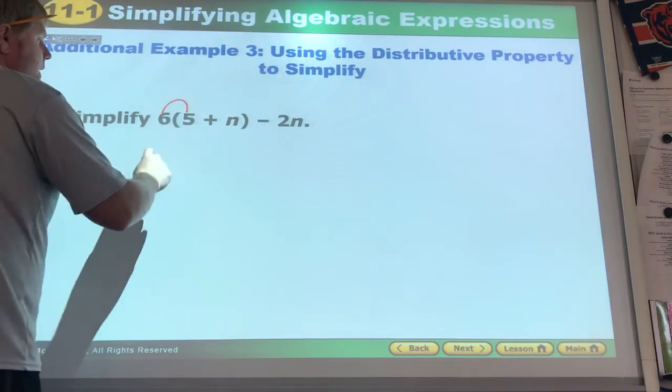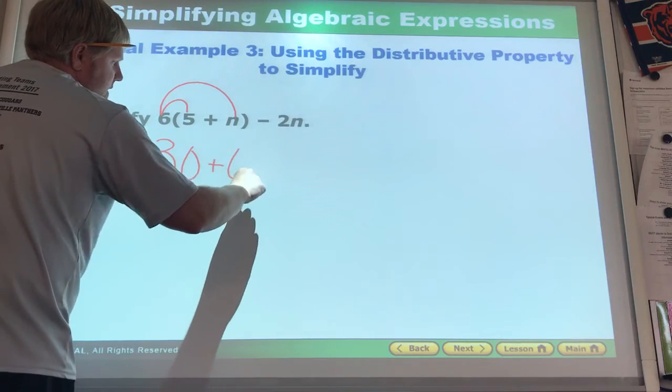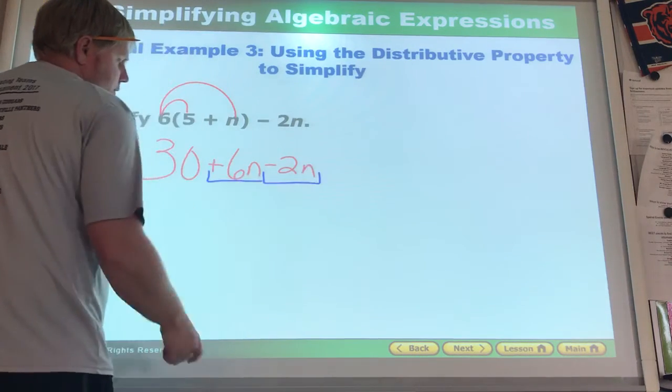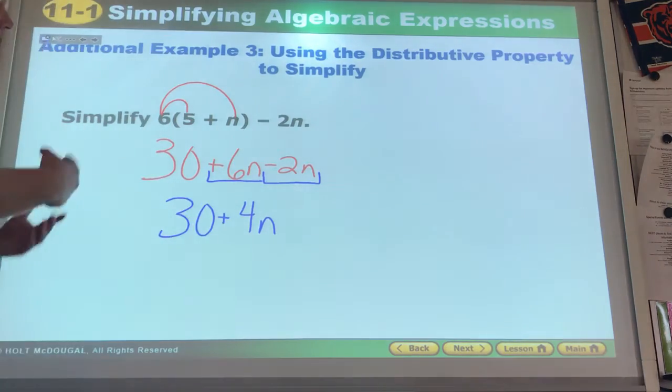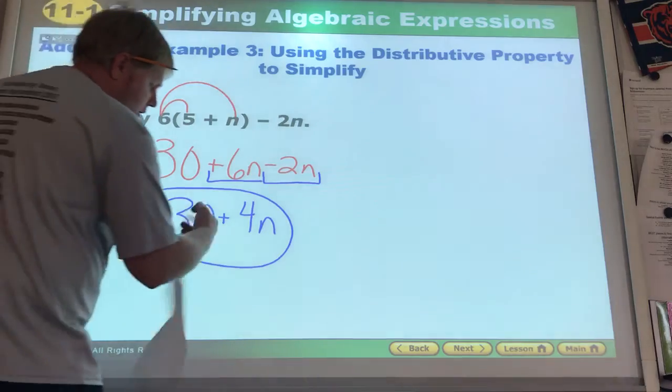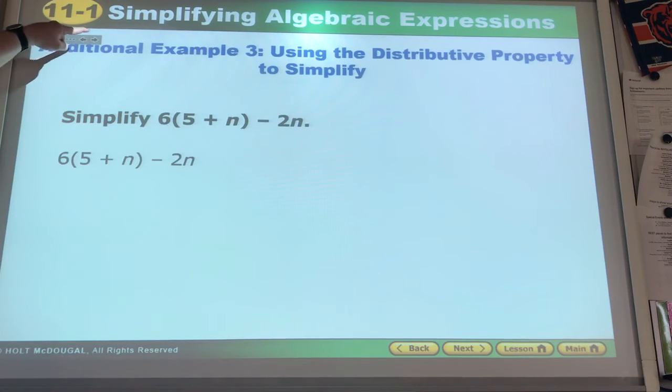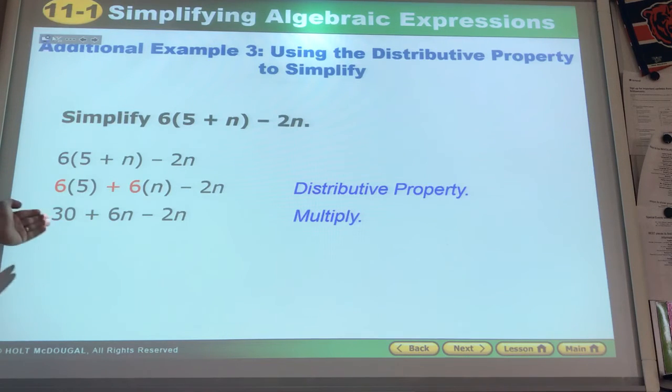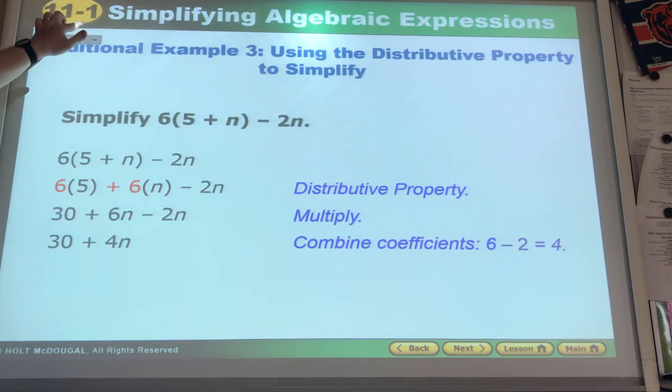So here that is 30. Distribute it there. That's 6n minus 2n. I look at like terms. Positive 6n, negative 2, that's 4n. We have our answer. These aren't like terms, they can't be added. They distribute them. We get what we had up there. They add the like terms which are these two. They get the 30 plus 4n.